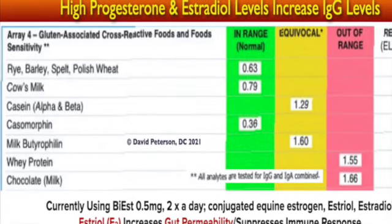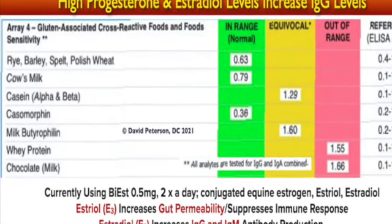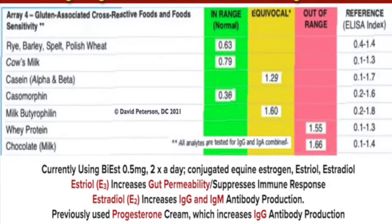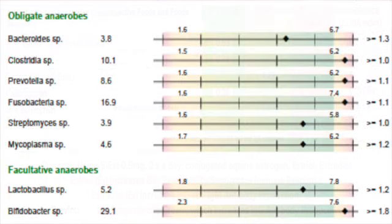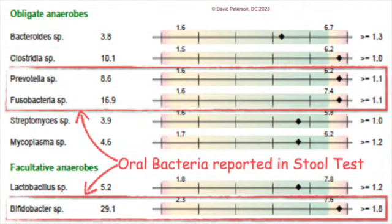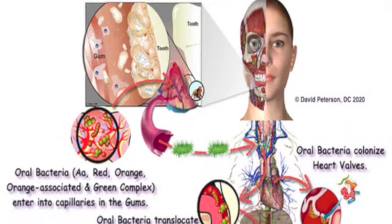My very first stool test that I ordered many years ago, I called tech support at Metametrics. The first thing the tech said was, 'It looks like you had an oral infection.' I was like, 'Oral infection? This is a stool test — where do you see that?' She said, 'Oh, I can't talk about it.' Nothing I could say or do would entice her to expand on oral bacteria.